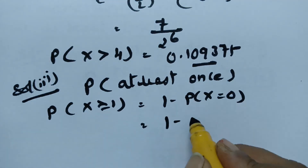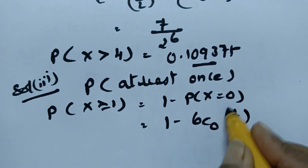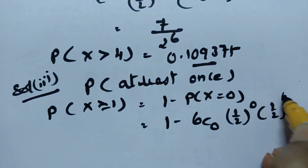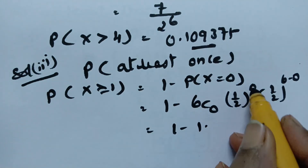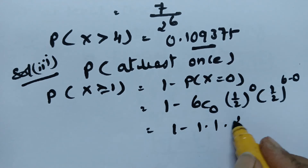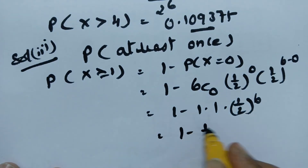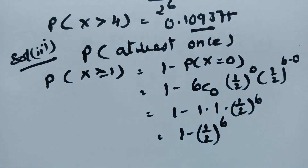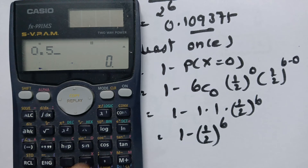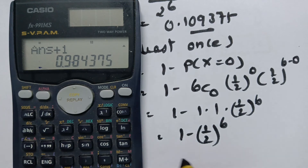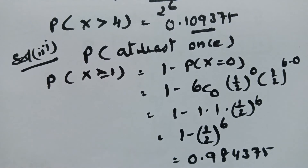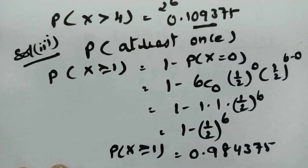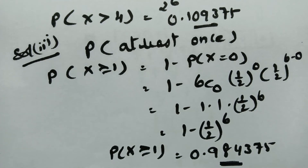Using the formula: 1 minus 6C0 times P^0 times Q^6. Here 6C0 equals 1, anything to the power of 0 is 1, and (1/2)^6 remains. So the value is 1 minus (1/2)^6, which equals 1 minus 0.5^6. The probability of hitting the target at least once is 0.984375.